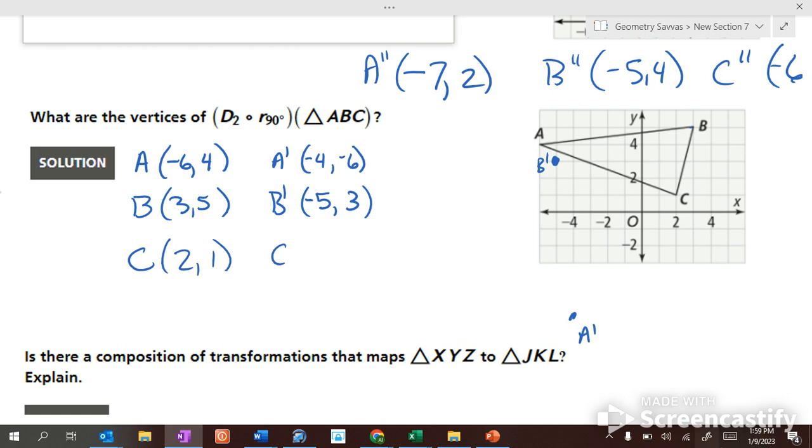B started out at (3,5). B prime - if we switch the numbers around, we go (5,3), and it's going to be (-5,3) because B was in this quadrant. A is way down here at (-4,-6). C started out at (2,1). C prime: switch them around - (1,2), and it's going to go into this quadrant, so it's going to be right there at (-1,2). Okay, so we just rotated that 90 degrees. Does that look like a rotation of 90 degrees? Yeah, that makes sense.